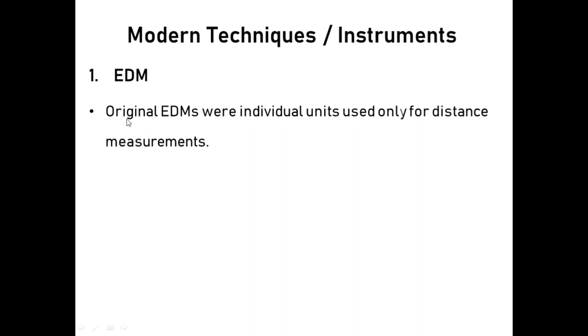Original EDMs were individual units used only for distance measurement. This is mainly done by taping or chaining. It is a rapid and precise method, so we use EDM because it is rapid and precise to measure distance between two points.